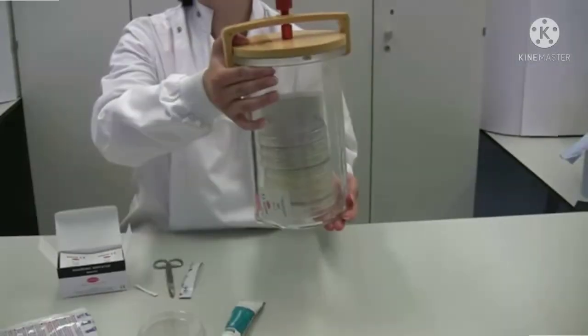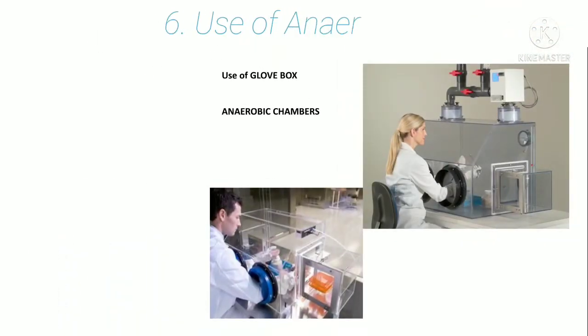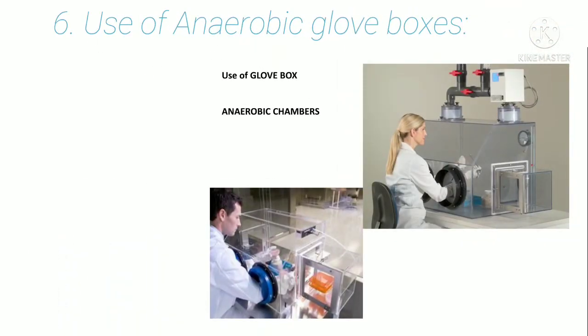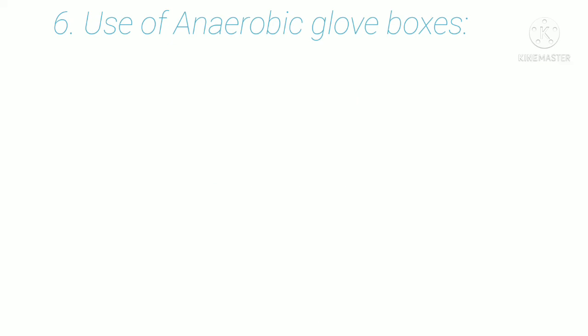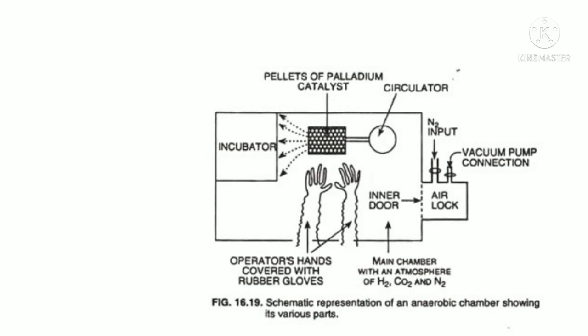This is how the jar looks after the final assembly. The use of anaerobic glove boxes or sophisticated equipment for maintenance of anaerobic cultures is the most reliable method, though it requires skillful operators.